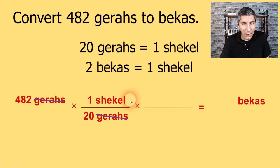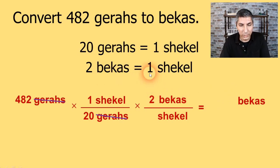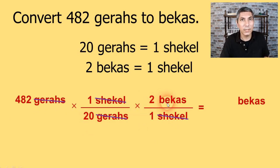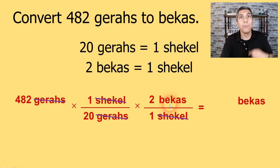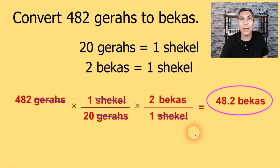In my next conversion factor, I'm going to put shekels on the bottom and since I'm converting to bikas, bikas goes on top. According to the conversion factor, there are two bikas in one shekel. So now I can cancel shekels. In my calculation, I take 482 divided by 20 times 2. Any number in the denominator you divide by, and you multiply by any number in the numerator. The answer is about 48.2 bikas. That's how you do a dimensional analysis problem with two steps.